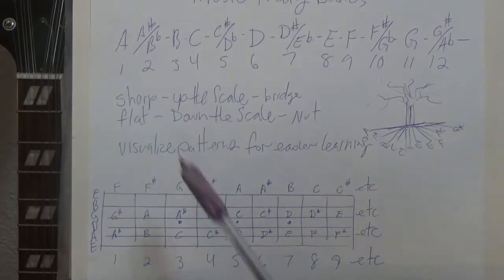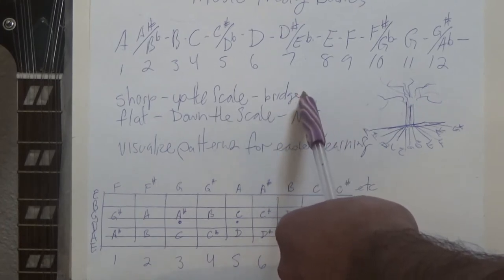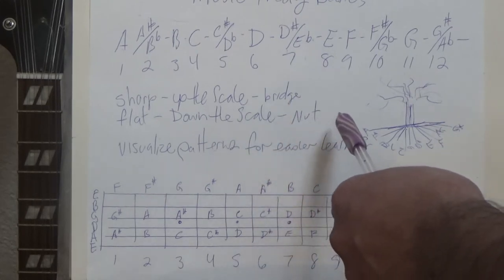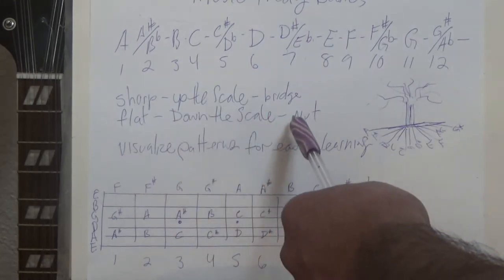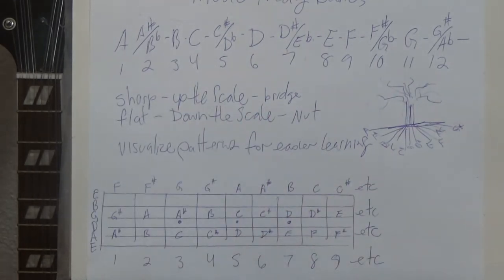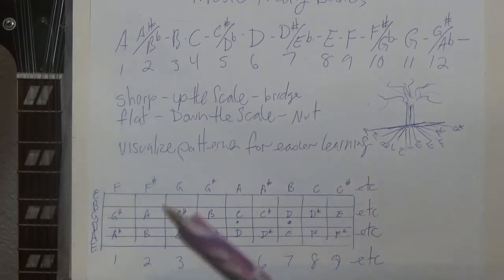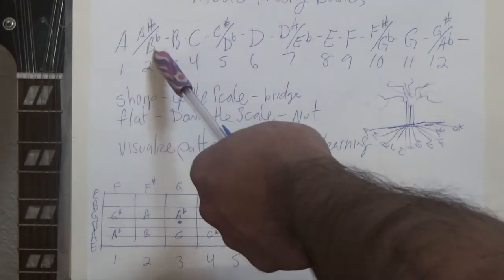Now on your guitar, sharp is up the scale, which is towards the bridge. So if you look at your guitar fretboard, you want to start at the nut and go up towards the bridge — that's sharp. Flat would be going down the scale, from say the bridge or the 24th fret, 22nd fret, however long your fretboard is, down to the first fret. That would be flat. So it's just a matter of what direction you're moving. If you're moving up the fretboard, it's going to be considered a sharp. If you're moving down the fretboard, it's going to be considered a flat.